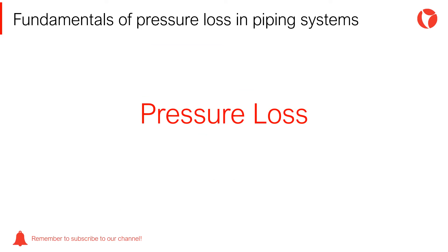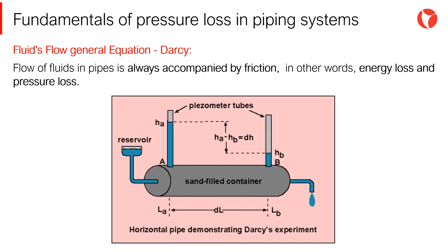The flow of fluid in pipes is always accompanied by friction, produced between the particles themselves and between the fluid and the pipe wall — in other words, energy loss. This means that there is a pressure loss in the direction of the flow. If two manometers are connected to two different sections of a pipe with a running fluid, the manometer at the inlet section will indicate a greater static pressure than the one at the outlet section, due to pressure loss. It is necessary to quantify this energy loss to adequately design the piping system.